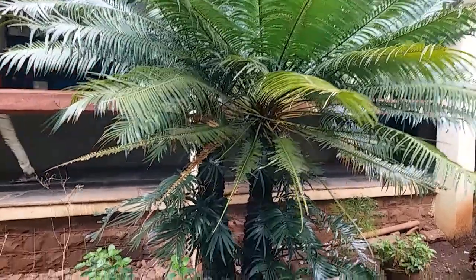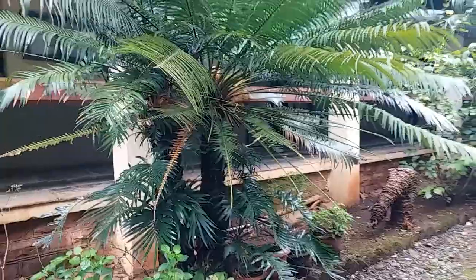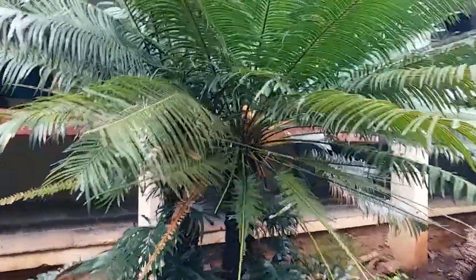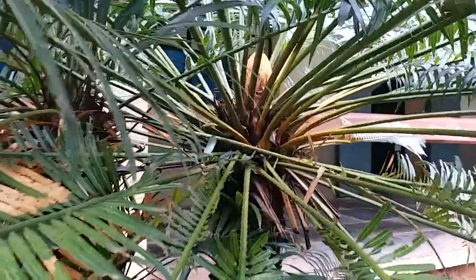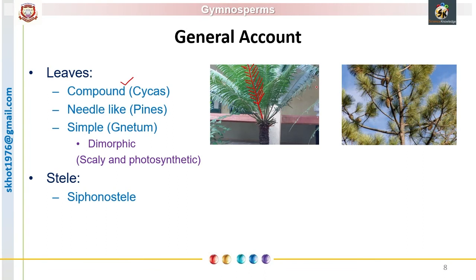We can see a variety of leaves in gymnosperms. In Cycas we have compound leaves — pinnately compound leaves arranged along a rachis. This pinnately compound leaf is characteristic of cycads and shows resemblance with pteridophytes. In pines we get needle-like leaves, whereas simple leaves can be seen in Gnetum. The leaves are also dimorphic: scaly leaves are brown, non-photosynthetic, and provide protection to the apical meristem, while photosynthetic leaves are green and function to produce food.